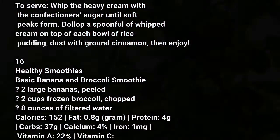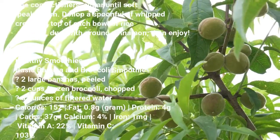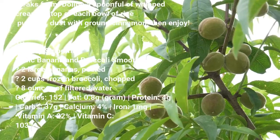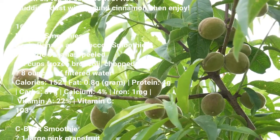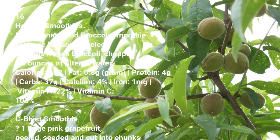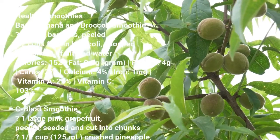To serve, whip the heavy cream with the confectioners sugar until soft peaks form. Spoon whipped cream on top of each bowl of rice pudding, dust with ground cinnamon, then enjoy.